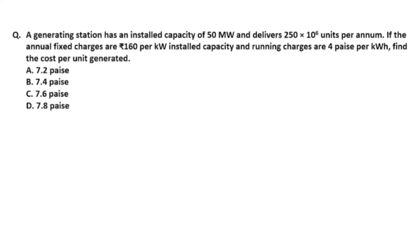A generating station has an installed capacity of 50 megawatt and delivers 250×10⁶ units per annum. The annual fixed charges are rupees 160 per kilowatt installed capacity and running charges are 4 paise per kilowatt hour. Find the cost per unit generated. Option A is 7.2 paise, option B is 7.4 paise, option C is 7.6 paise, option D is 7.8 paise.